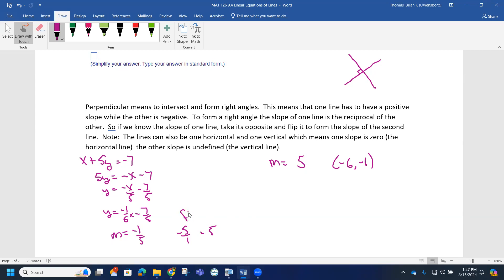So this is going to be the opposite reciprocal. The opposite of a negative is a positive, and if I flip it, I'm going to get a 5. So what I want to do now is I want to use this information to create the equation of the line that I'm looking for.